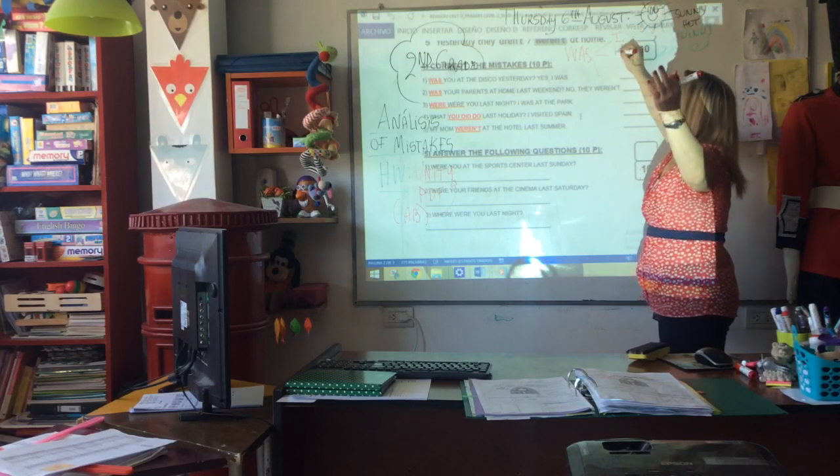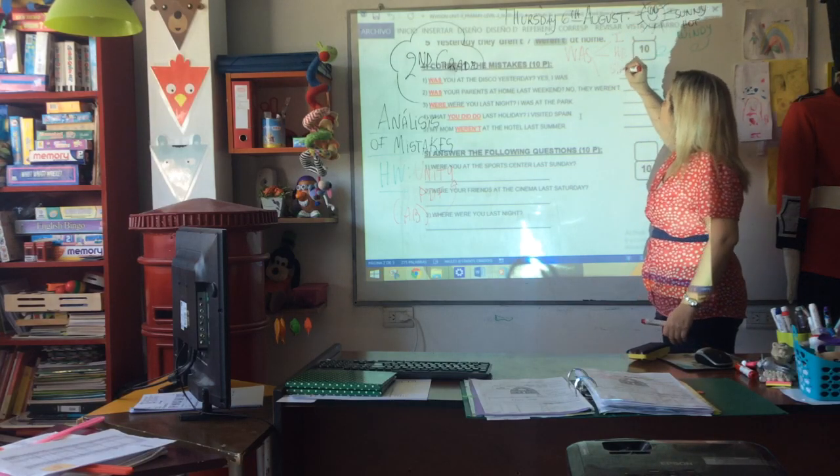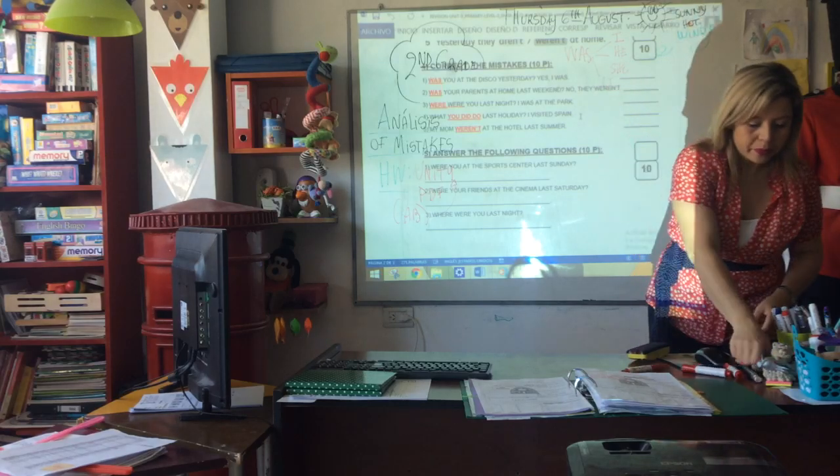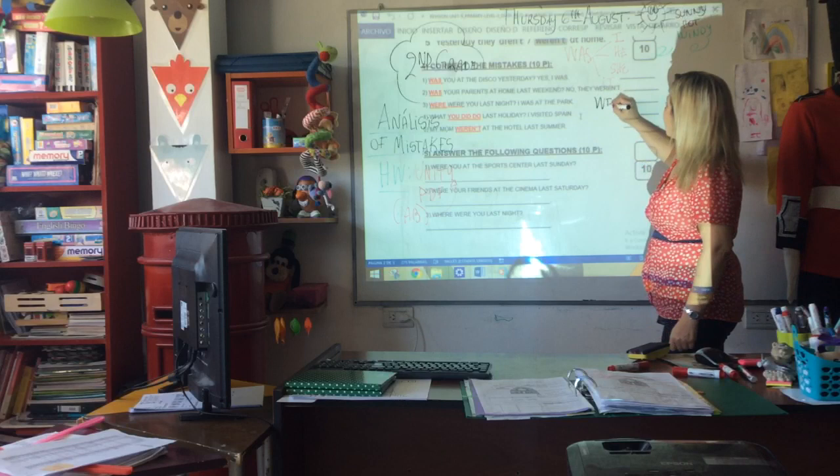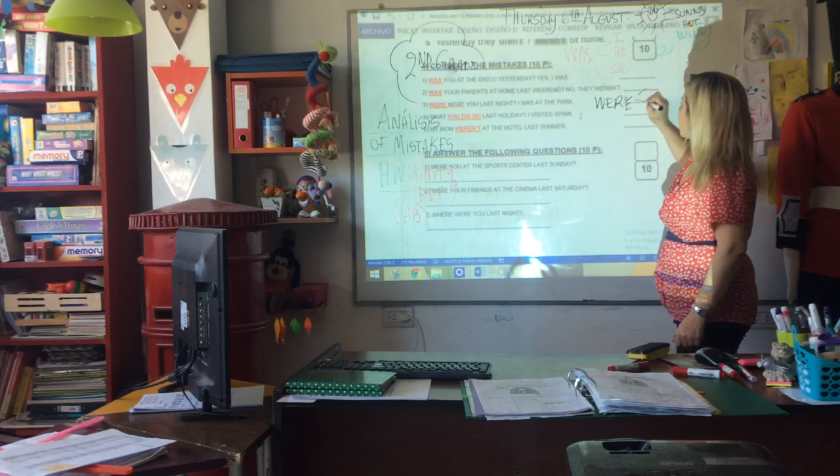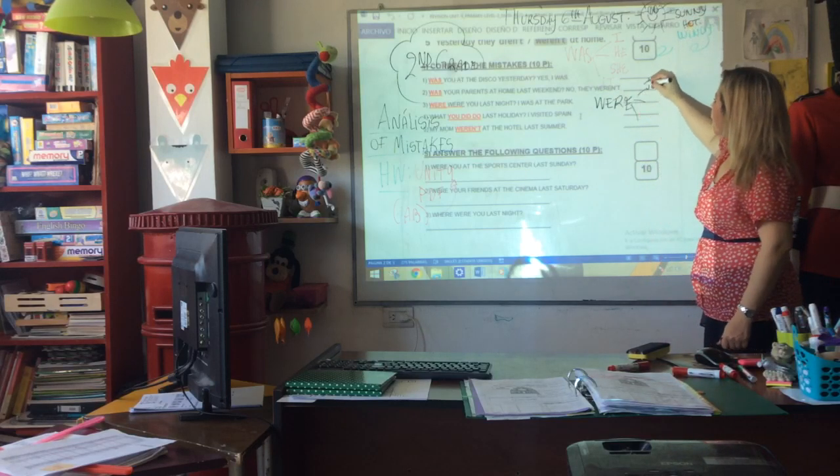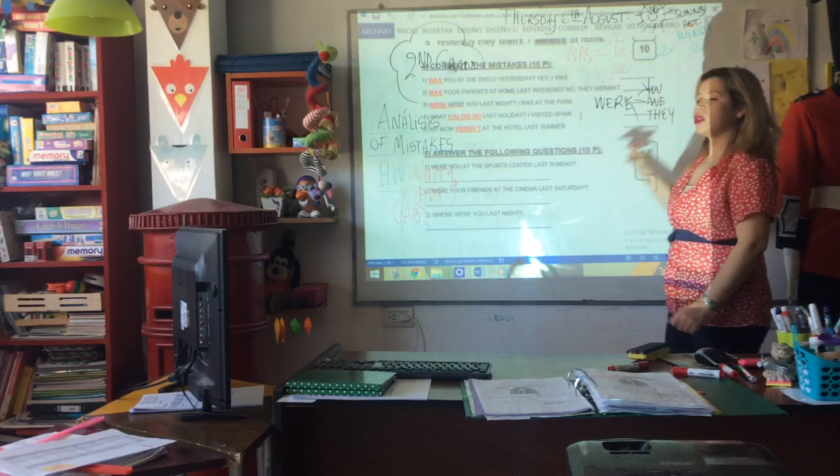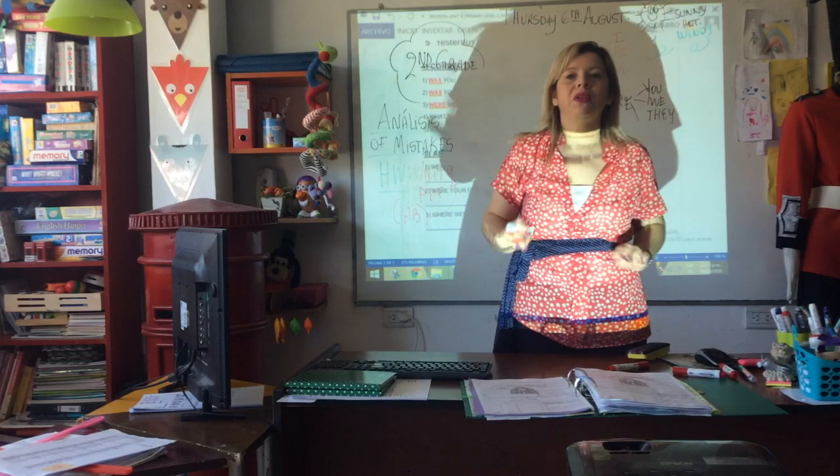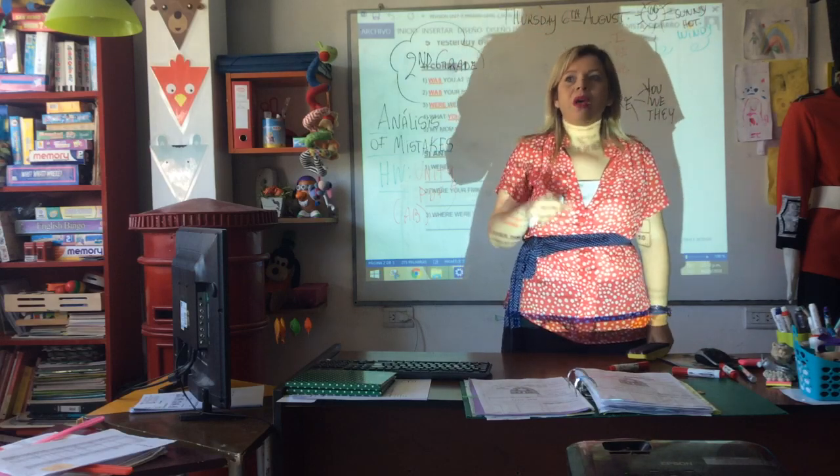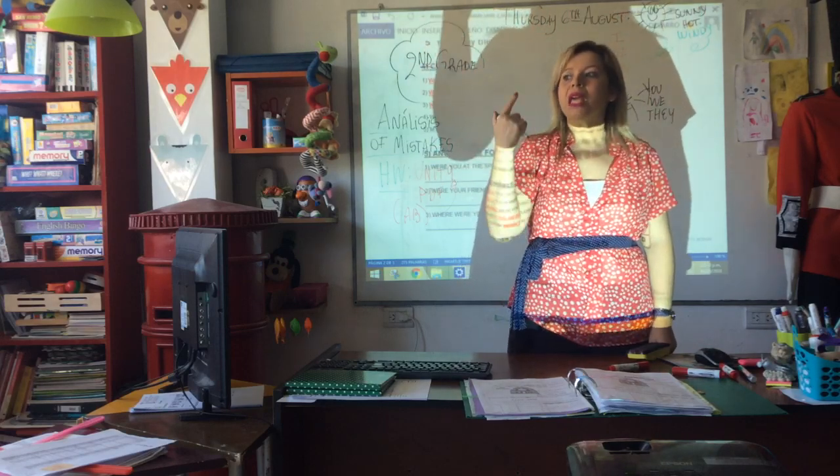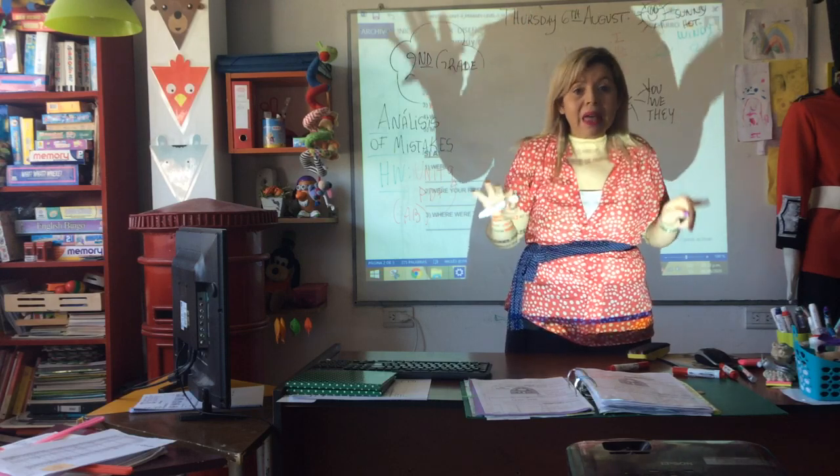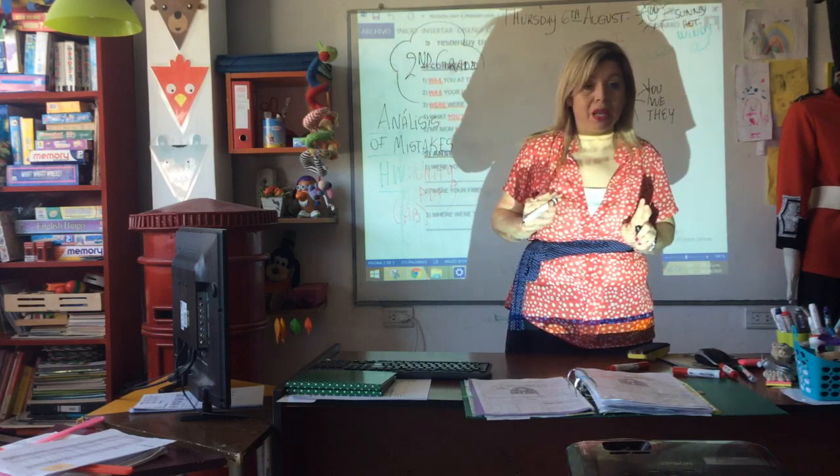Y esto es lo que tenés que estudiar: was - I, he, she, it. Were - you, we, they. Cuando vos te encerrás en tu habitación decís I was va con I, he, she, it. Were va con we, you, they. Nada más. Eso es lo que te pido que tenés que estudiar.